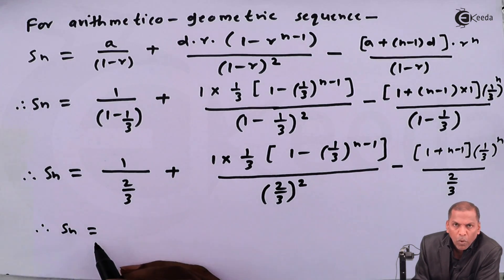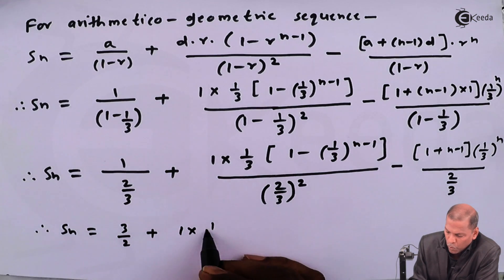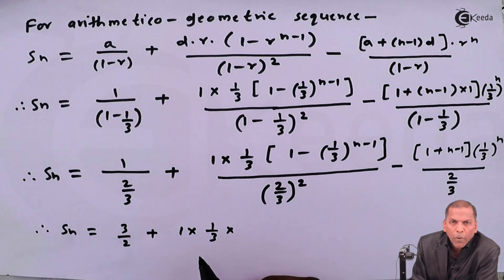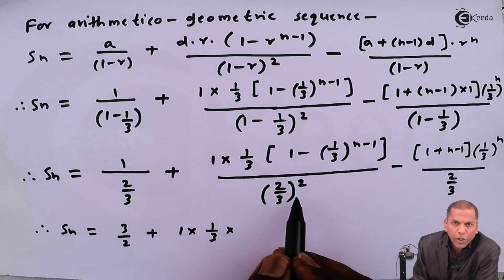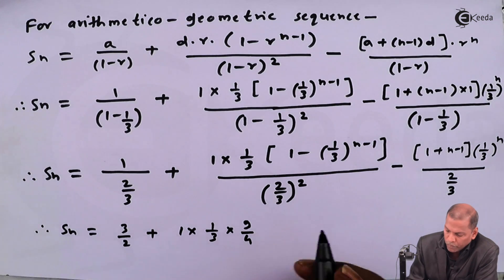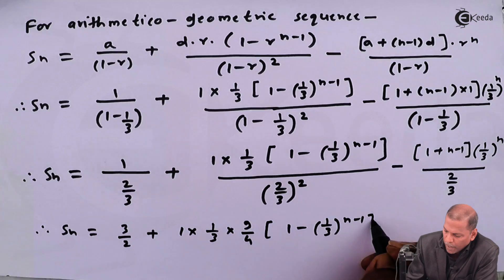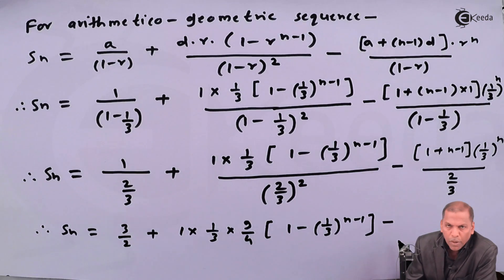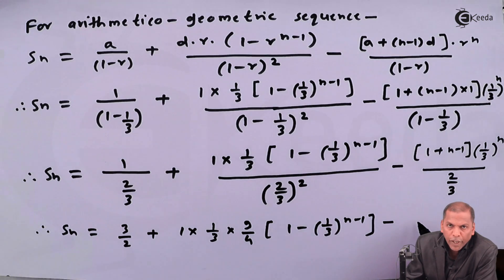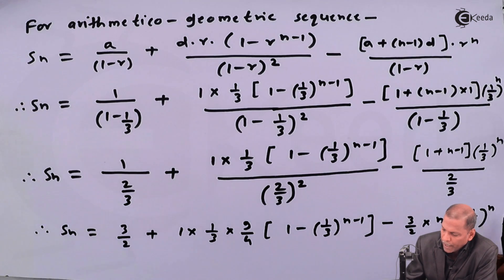Simplifying further: the first term is 3/2. For the second term, 1×(1/3)×(9/4) = 3/4, so we get (3/4)·[1 − (1/3)^(n−1)]. The last term becomes (3/2)·n·(1/3)^n.